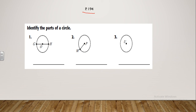You need to identify the part of a circle. The first line crosses the center and starts from two points on the circle, so that is called the diameter. What about this one? This line starts from the center and ends on a point on the circle — that is called the radius. Great job. And what about this point? Good job, I can hear you — that is the center.